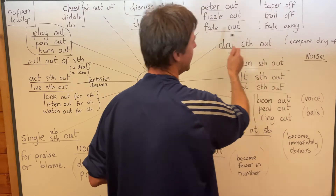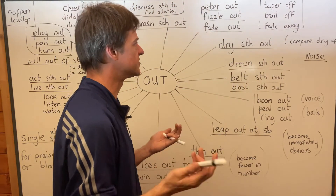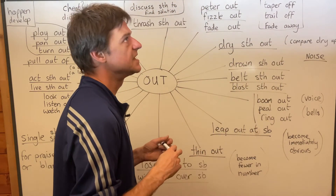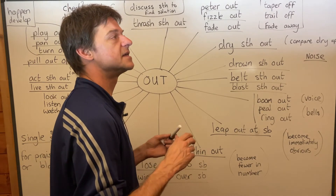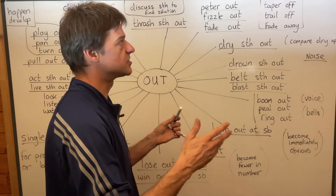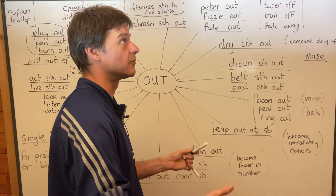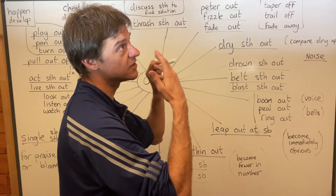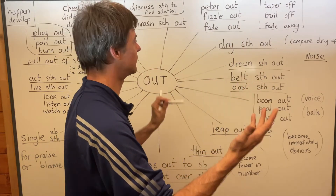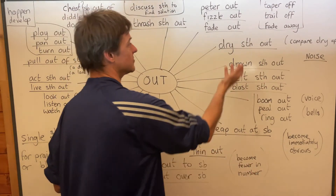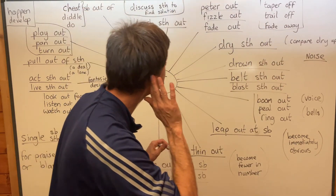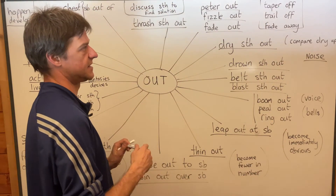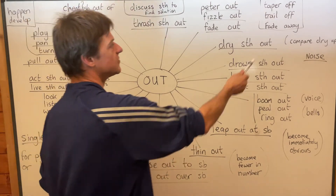Same with 'fade away,' which is more or less identical to 'fade out.' If you're watching a video and the image fades away or fades out, it just means it gets gradually weaker and then just a black screen. If the sound fades out or fades away, it gets quieter and quieter and then you can't hear anything. So all of those — all six of them.